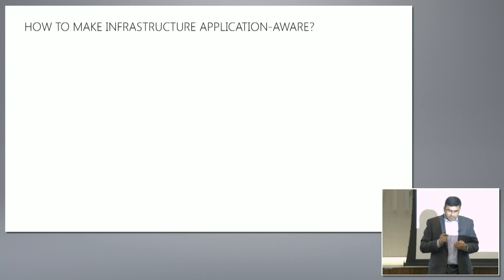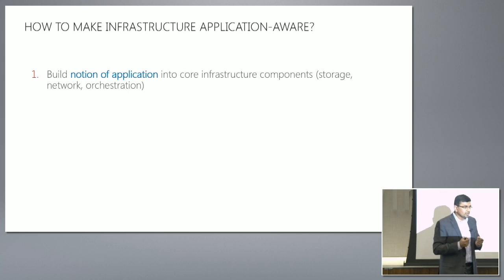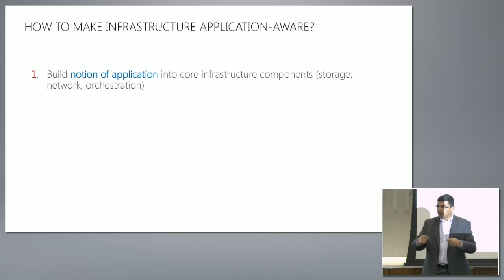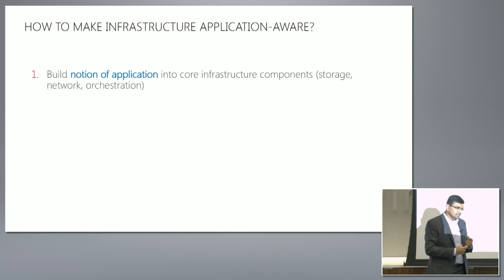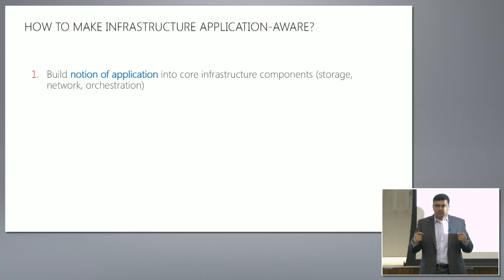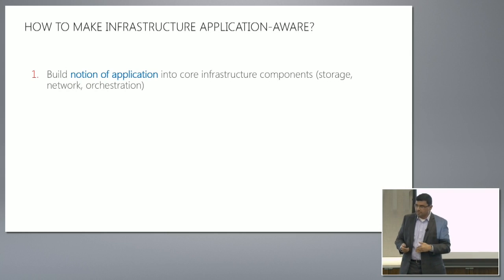How do we change this? We make the infrastructure itself application-aware by building the notion of an application into the core infrastructure components — storage, networking, and orchestration. The notion of an application could be as simple as an ID that tags different components together: an ID carried from the container to the storage to the network. Or it could be things like the topology that makes an application — a multi-partition application like Mongo or Cassandra where all partitions are tagged so that the underlying storage and networking understand they form one application.